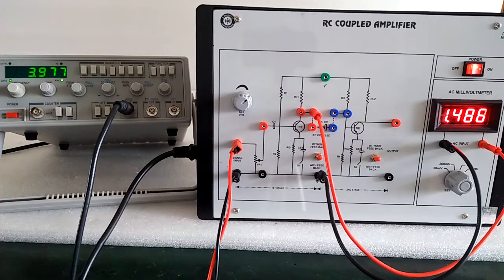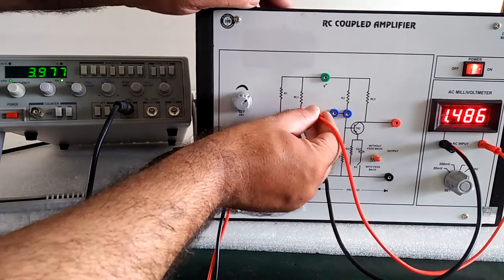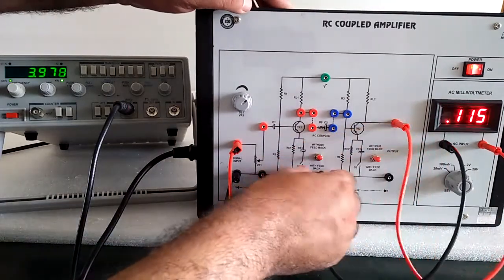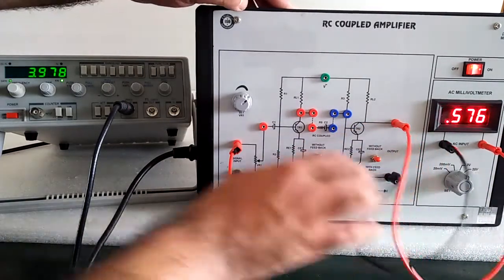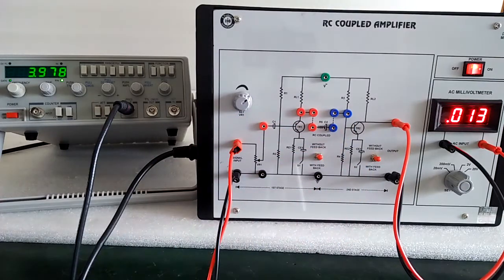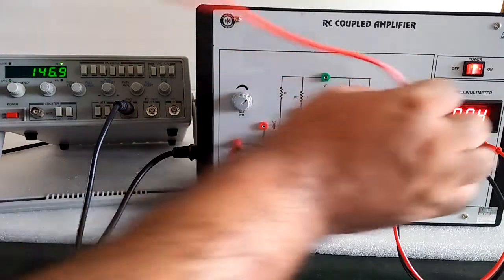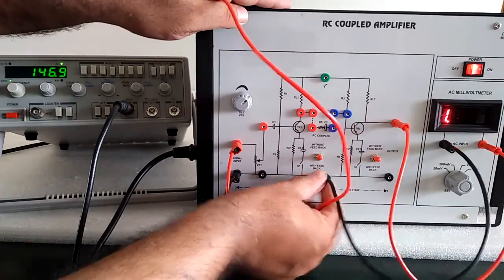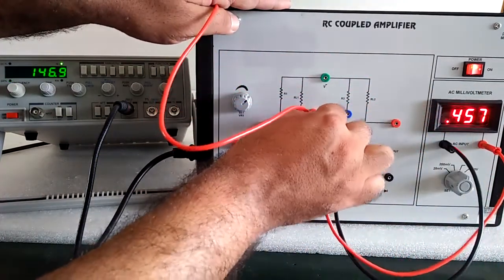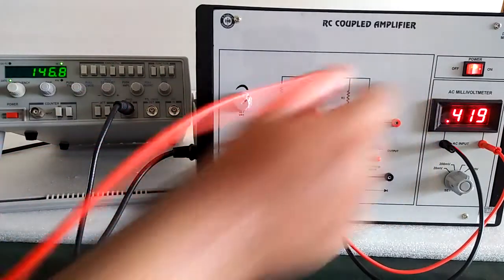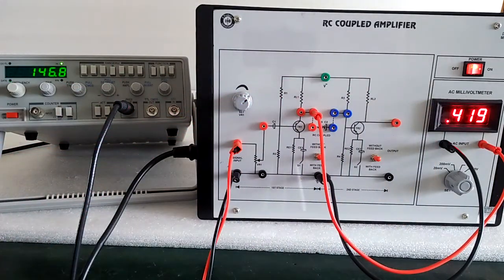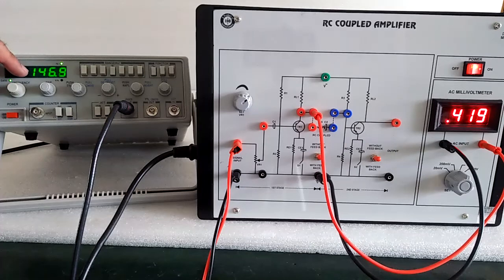Now for the second stage, we have to connect this at the end of the circuit and these two dotted lines we have to connect it. As we get here, what is the single stage amplification around 0.41 volt at this frequency.